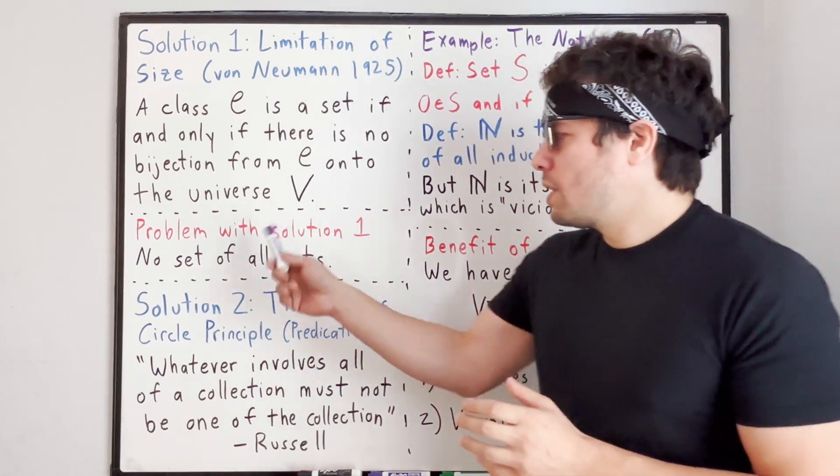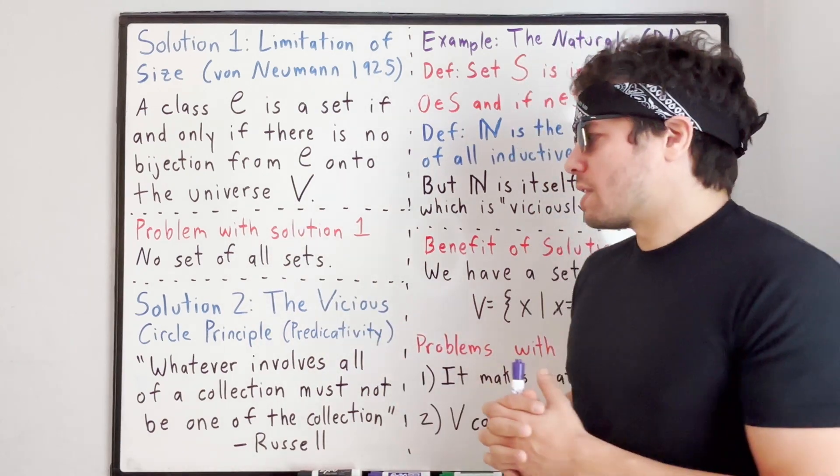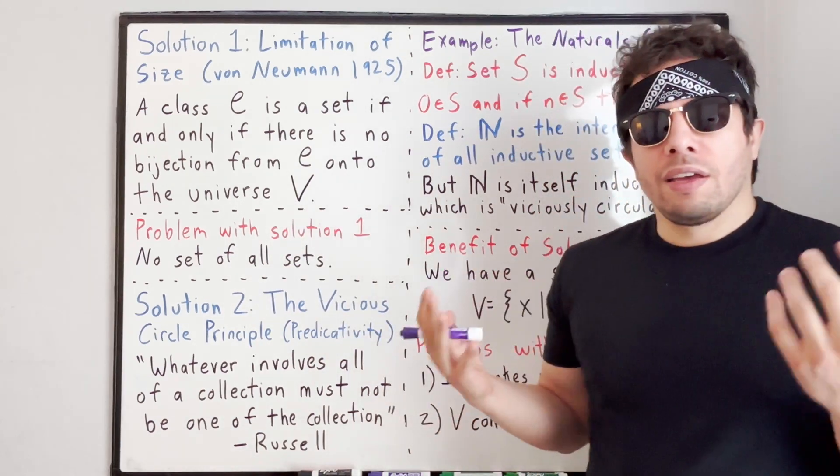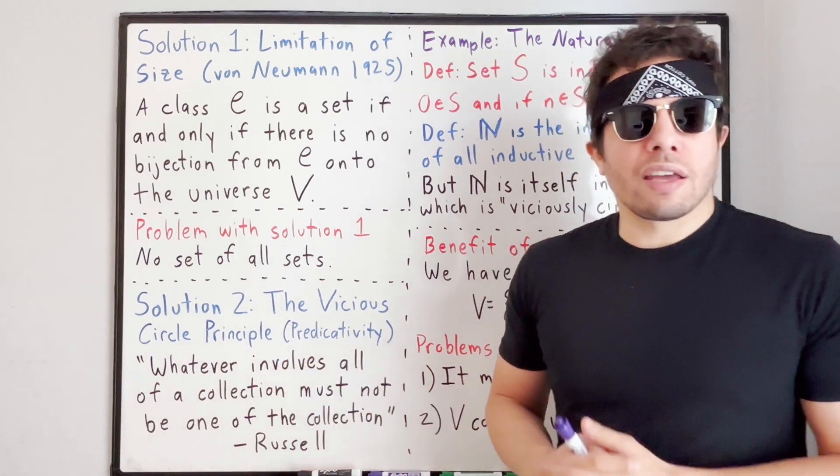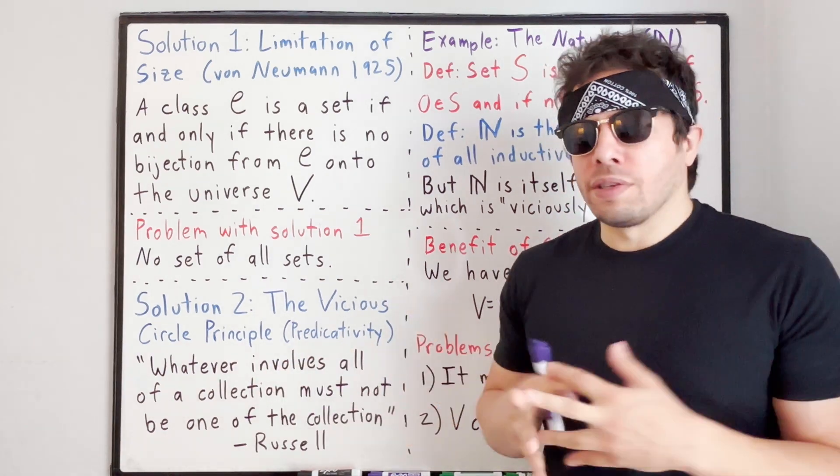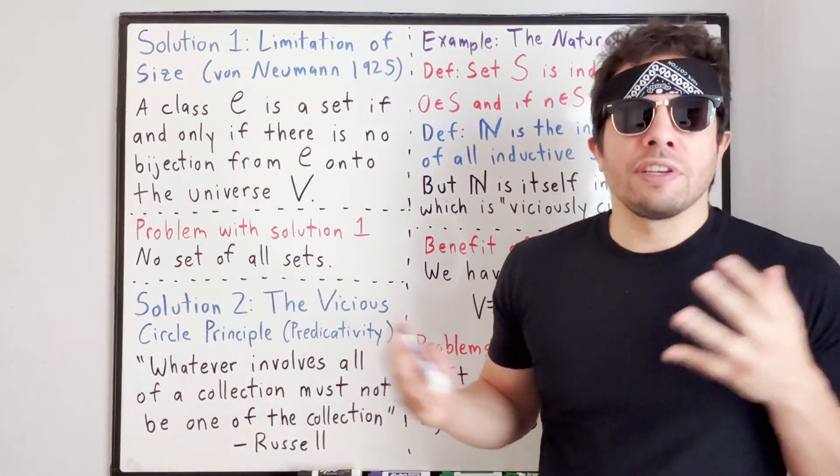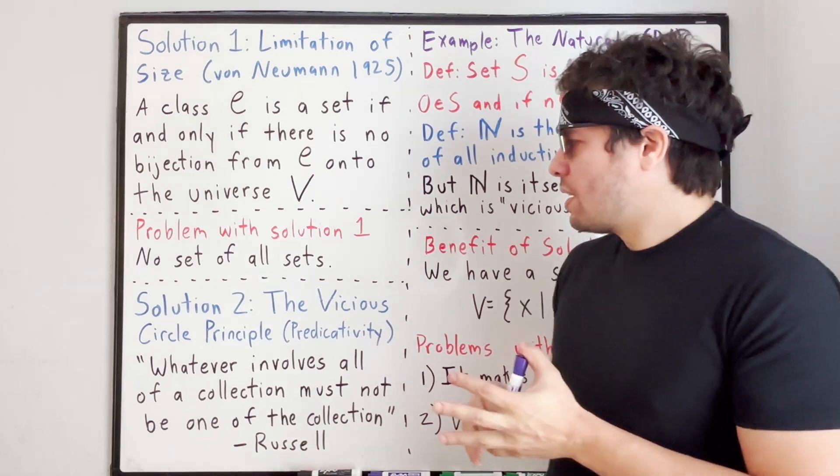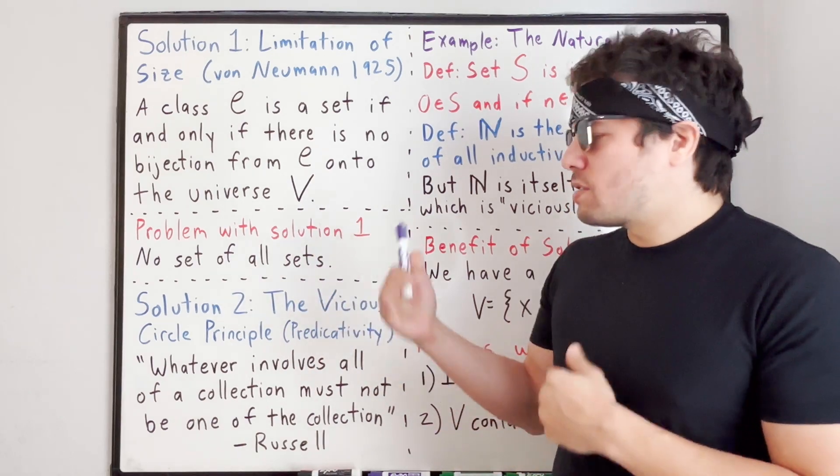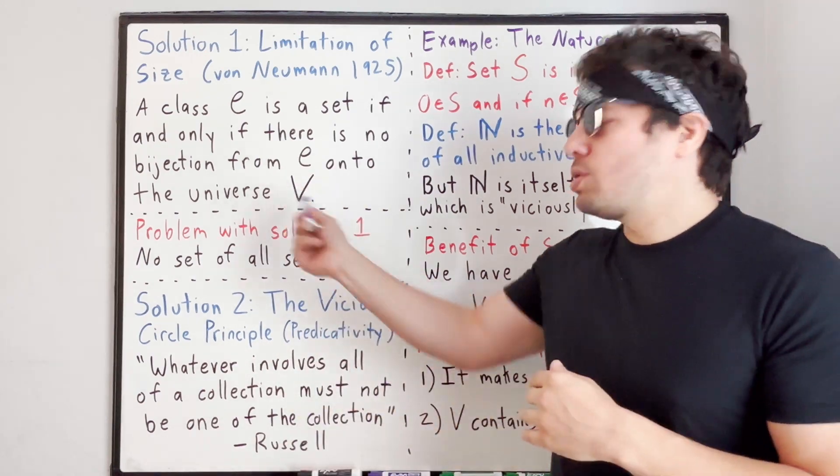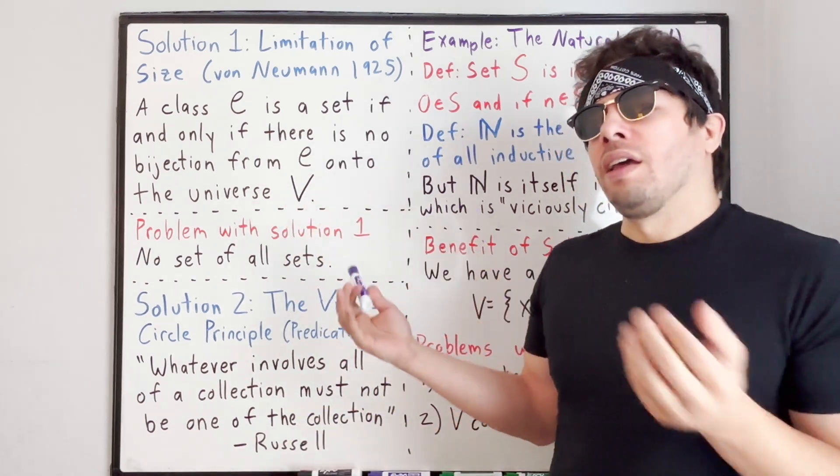One problem with solution one is there is no set of all sets. Now for me, the set of all sets sounds like a completely logical, coherent idea, and it's not obvious that we shouldn't have such an object in our system.